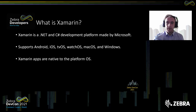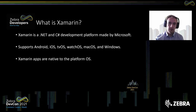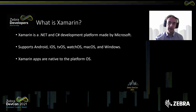Let's start off with the basics. What is Xamarin? Xamarin is a .NET and C-Sharp development platform. It's made by Microsoft. It allows seamless development for different types of applications and platforms. It supports Android, iOS, tvOS, watchOS, macOS, and Windows.